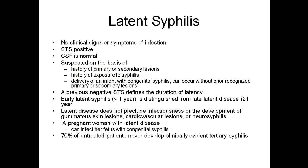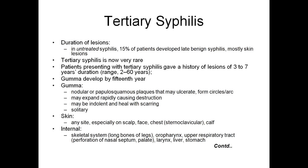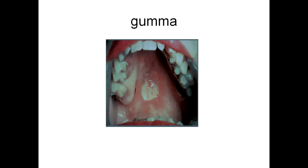Tertiary syphilis: in untreated syphilis, 15% of patients develop late benign syphilis — mostly skin lesions. Tertiary syphilis is very rare. Patients present with a history of lesions of three to seven years duration, even up to two to sixty years. Gummas develop by the fifteenth year. Their appearance: nodular papulosquamous plaques that may ulcerate, form circles or arcs, may expand rapidly causing destruction, may be indolent and heal with scarring, and are mostly solitary. Any skin site may be involved — especially scalp, face, chest, and calf. Internal involvement: skeletal system, long bones of legs, oropharynx, upper respiratory tract — with possible perforation of nasal septum, palate, larynx — and liver and stomach may be involved. This is the gumma on the hard palate — a solitary lesion. These are plaques involving the face. This is the nodulo-ulcerative type of gumma.